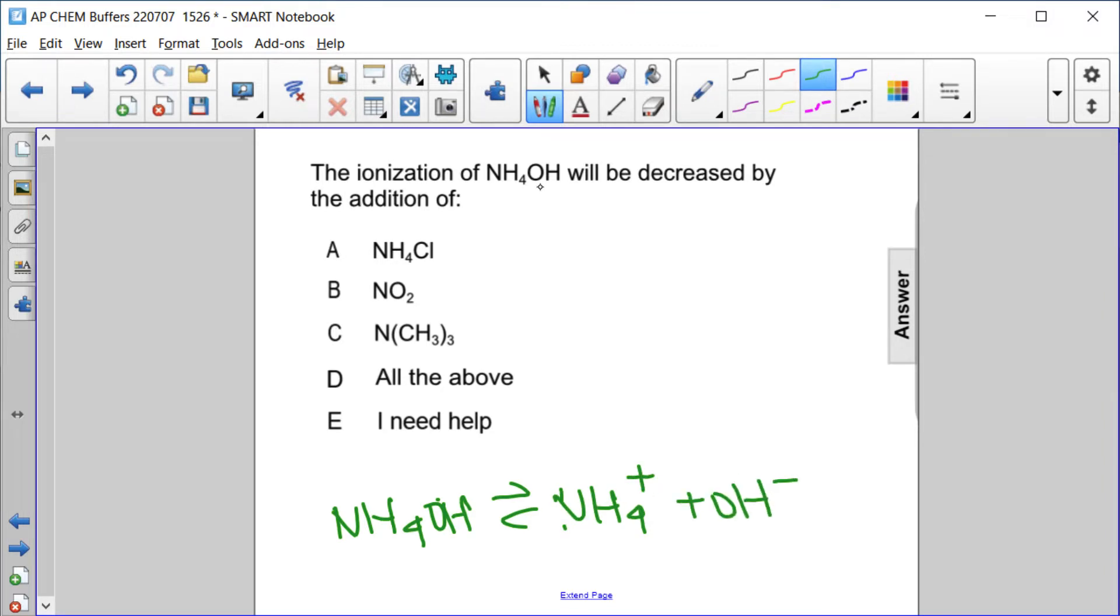So the ionization of the weak base will be decreased when we shift the equilibrium to the left. And the only way to do that is to add one of these common ions.